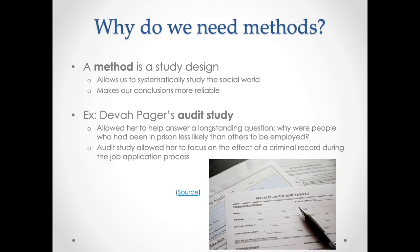A method is something that allows us to systematically study the social world, and the idea of a method is a claim that it allows access to legitimate knowledge. Methods are the subject of vigorous debates, in part because there are debates about what legitimate knowledge looks like — how we know if something is true, even among people who consider themselves social scientists.